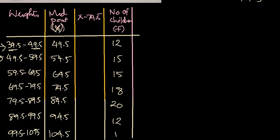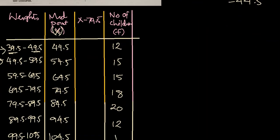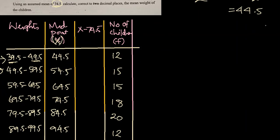Now, next step should be that we should subtract 74.5 from each one. The assumed mean is 74.5. So we will remove that one. The purpose is that these big numbers become simpler and smaller. That's why we subtract the assumed mean.